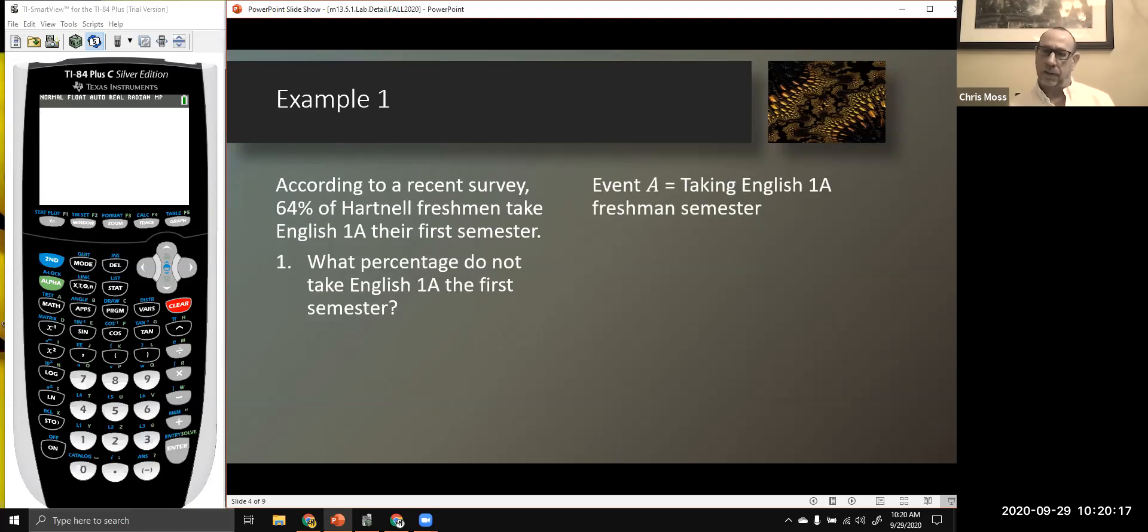In this case, the event A is taking English 1A that freshman semester, while the complementary event, the A bar, is not taking English 1A in your first semester. Either you do or you don't, it's 100% of all those results. This enables us to determine the percentage of students who do not take English 1A the first semester. We merely subtract the 64% from the 100%. But notice all the words that go along with this.